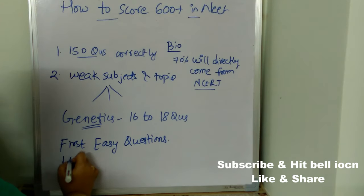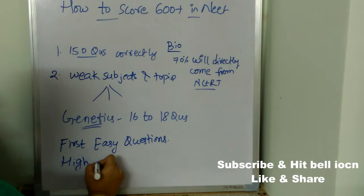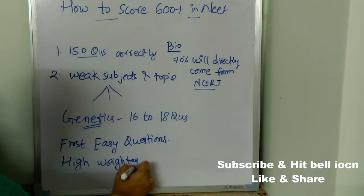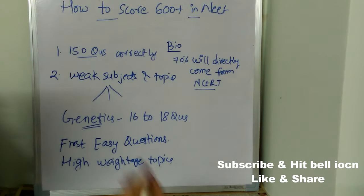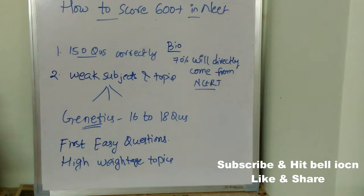Next, concentrate on high-weightage topics. In every subject — physics, chemistry, and biology — there will be a few high-weightage topics. You need to concentrate on those particular topics first, as only these high-weightage topics will help you score 600 plus marks in NEET.